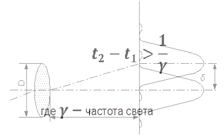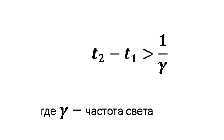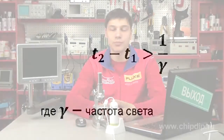It is necessary that the difference between the time the top and the bottom extreme rays spend to get to each other's images is greater than a certain value. This value is approximately equal to the vibration period of a light wave. The size of the smallest object we will be able to see is about the same as the length of a light wave.